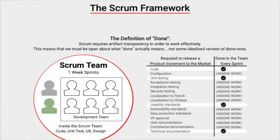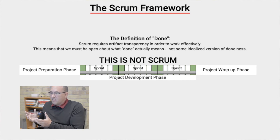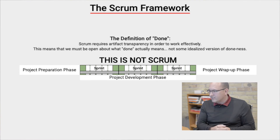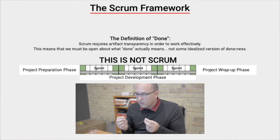Many organizations create a hybrid model, inserting Scrum sprints within a traditional project management approach. They have a preparation phase for design and requirements gathering, then a development phase with some sprints limited to coding and basic testing, and finally a project wrap-up phase for compliance sign-offs and documentation. This is not Scrum — it's a hybrid. You're using the Scrum process, but it's not the Scrum framework, because in this situation the Definition of Done is not equivalent to potentially releasable increments.